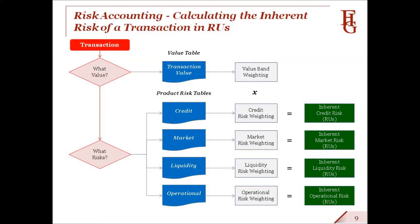In summary, we start with the transaction's value and map it to something called a value table, where we look up the applicable value band weighting and assign it to the transaction. We'll come back later to discuss the value table in more detail. We then determine what risks are triggered by the transaction and go to the relevant product risk lookup tables, where we ascertain the applicable product risk weightings and assign them to each transaction. For example, credit product risk weightings are based on expert assessments made of the underlying collateral by reference to its value retention properties and the degree of anticipated difficulty in arriving at a liquidation price upon disposal. This product-by-product risk assessment is then scaled to a weighting of between 1 and 20. Each transaction's inherent risk in RUs is then arrived at by multiplying the value band weighting by the product risk weightings.